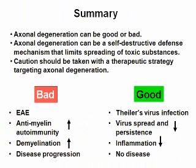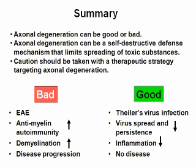In summary, axonal degeneration can be good or bad. In EAE, axonal degeneration results in higher anti-myelin autoimmune responses and high levels of demyelination, leading to disease progression. In contrast, in Theiler's virus infection, axonal degeneration prevents virus spread in the brain. This results in low levels of inflammation and mice develop no disease. This suggests that axonal degeneration can be a self-destructive defense mechanism that limits spread of toxic substances — in this case, virus. Therefore, caution should be taken with a future therapeutic strategy targeting axonal degeneration.